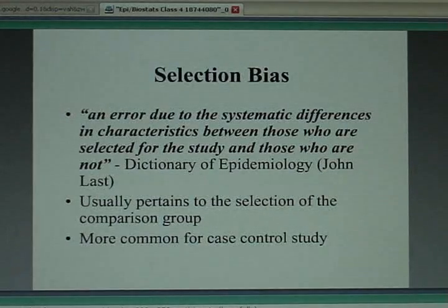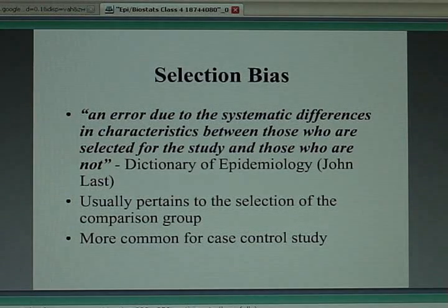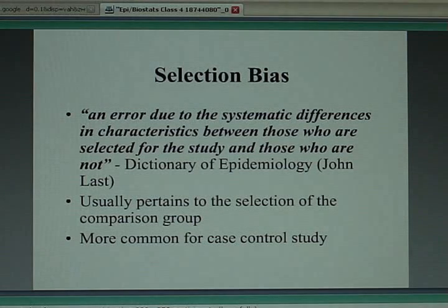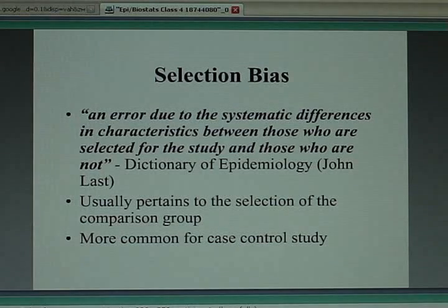There's an epidemiologist by the name of John Last, a Canadian, who wrote a book called The Dictionary of Epidemiology. Regarding selection bias, he refers to an error — a mistake — due to systematic differences in characteristics between those who are selected for the study and those who are not. Basically, selection bias means you've enrolled the wrong people — not the people you think you should have — and that usually refers to the comparison group.